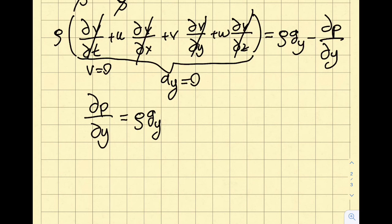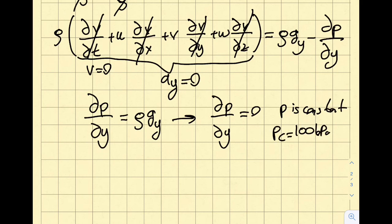If for some reason you get g y is equal to zero, then you can see this del p del y becomes zero. And in this case, what does this mean? This means that the pressure is constant. Pressure is constant, it's not changing. So I can get my pc is equal to 100 kPa as well.